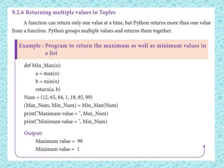In the next print, the maximum value comes to the next print. The maximum value and minimum value will be assigned from the function. The maximum value is 99 and the minimum value is 1.